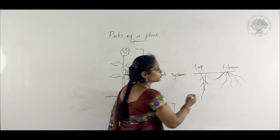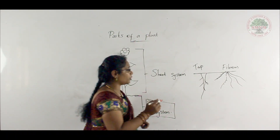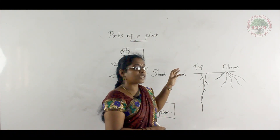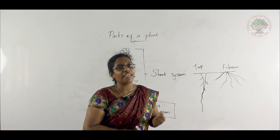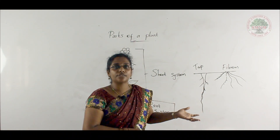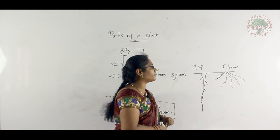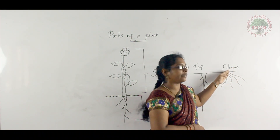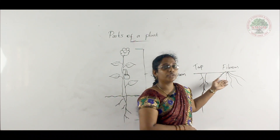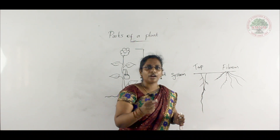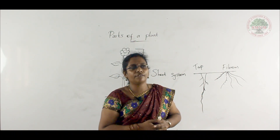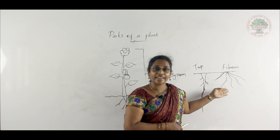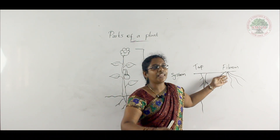In the case of tap root, it contains one main root and it can grow very deep into the soil, making the plant very strong. A plant with a tap root cannot be uprooted easily — most big trees have tap roots. In the case of fibrous root, there is no main root; many roots arise from a central point. Grass is a very good example of fibrous root, and it can be uprooted very easily because of this.